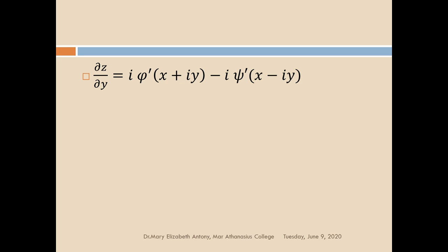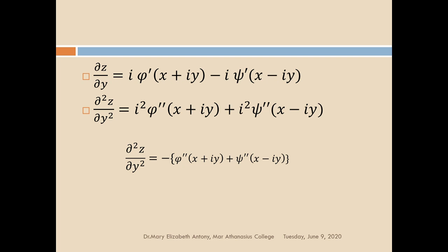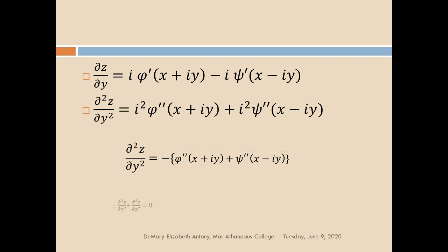Differentiating with respect to y, we get i into phi dash of x plus iy minus i into psi dash of x minus iy. Then dou squared z by dou y squared equals i squared phi double dash of x plus iy plus i squared psi double dash of x minus iy. Since i squared equals minus 1, this becomes minus of phi double dash of x plus iy plus psi double dash of x minus iy. This equals minus of dou squared z by dou x squared, so the PDE is dou squared z by dou y squared plus dou squared z by dou x squared equal to 0.